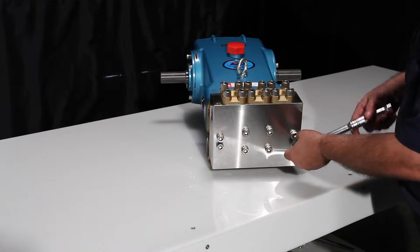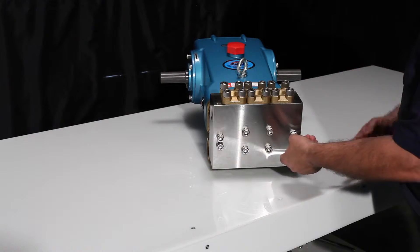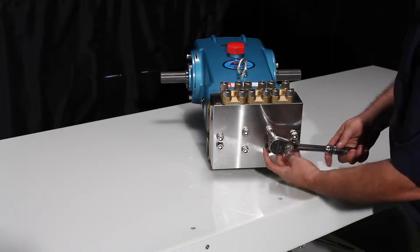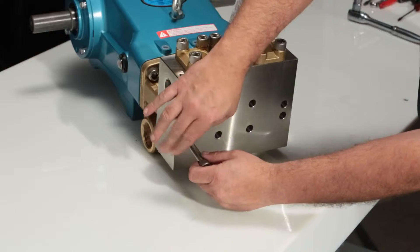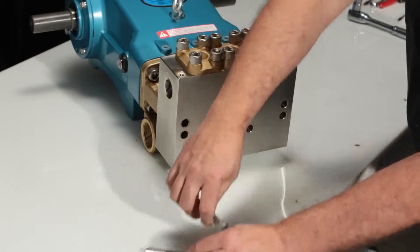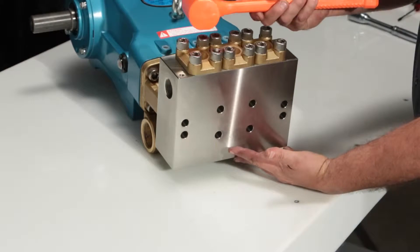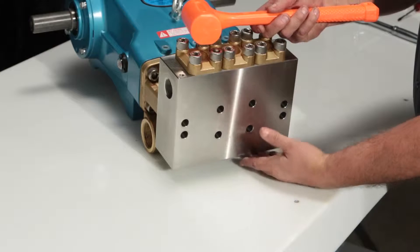To service the seals, begin by removing the eight discharge manifold bolts using a 10mm allen wrench. Using a rubber mallet, tap the discharge manifold away from the dry vent.